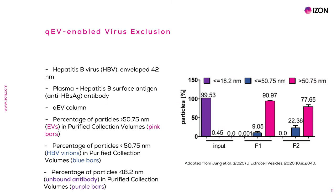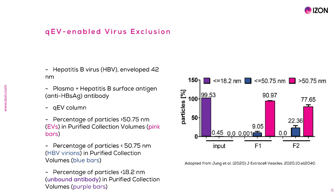In another example, a group investigated the role of EVs in the infection of Hepatitis B, an enveloped 42-nanometre virus. To do so, they removed Hepatitis B, leaving just EVs behind. The graph indicates the significant removal of virus particles following QEV purification, as represented by particles smaller than 50.75 nanometres.